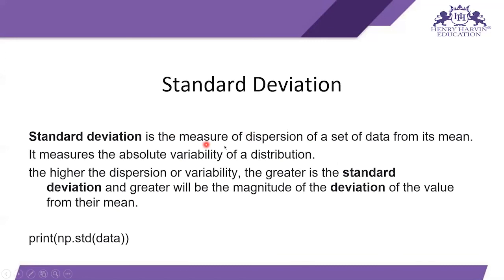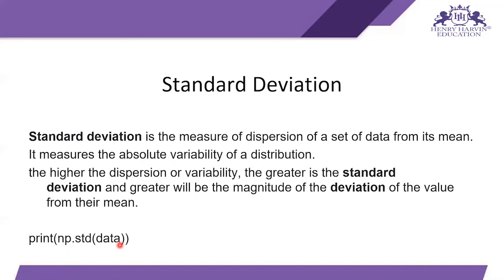Standard deviation is the measurement of dispersion of a set of data from its mean. It measures the absolute variability of a distribution — the higher the dispersion or variability, the greater the standard deviation and the greater the deviation of values from their mean. In the coding session, we calculate it using: print(np.std(data)).